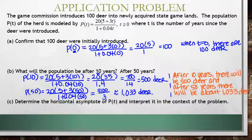Determine the horizontal asymptote of P(t) and interpret it in the context of the problem. To determine the horizontal asymptote, we need to figure out what the degree on top is and the degree on bottom.